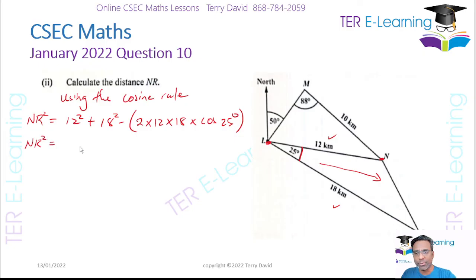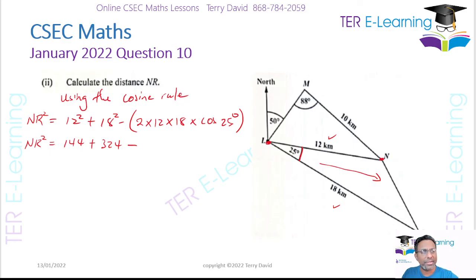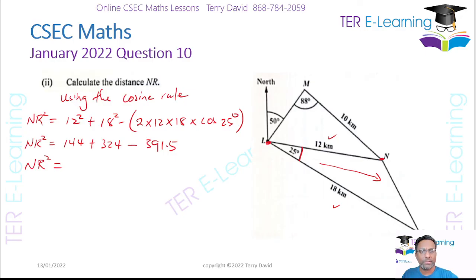So NR² = 144 + 324 minus the bracket. Working out 2 × 12 × 18 × cos 25° in the calculator gives 391.5. Therefore NR² = 144 + 324 − 391.5. Using the calculator: 144 + 324 − 391.5 = 76.5.